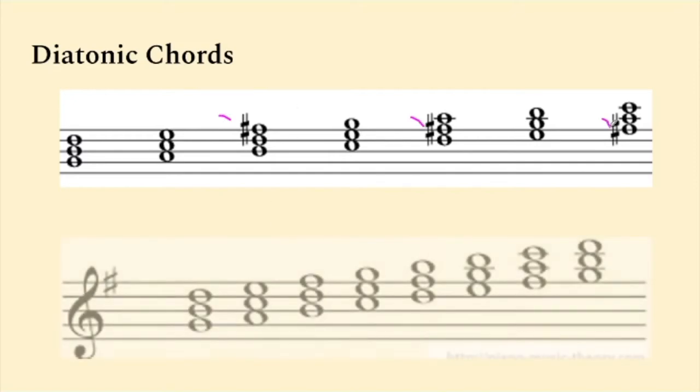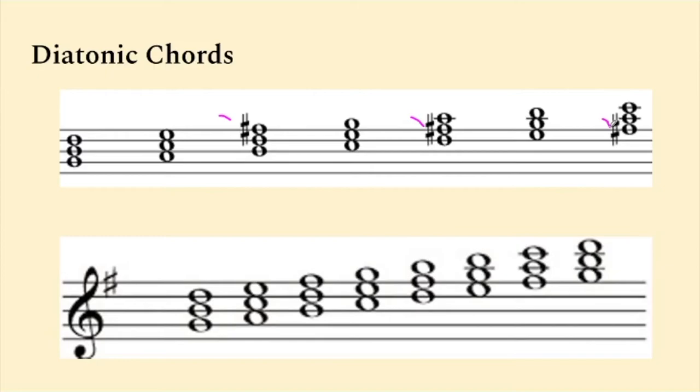You can also think of this using key signatures. For G major diatonic chords, if you write in the key signature, then build all your diatonic chords, you will automatically have all the corresponding diatonic major chords without having to add any accidentals. So this key signature will apply to all the F sharps.